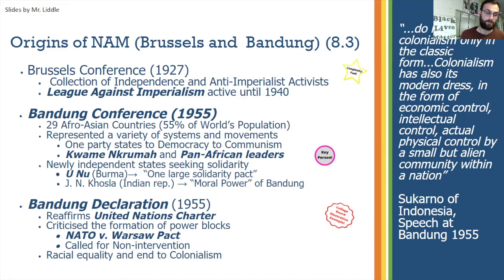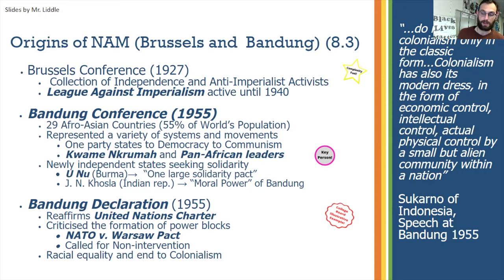The Bandung Declaration that came out of the conference did several things. First, it reaffirmed the United Nations Charter — even though these nations hadn't had a say in its creation in 1945 before most of them were independent, they claimed it as their own. They also criticized the formation of power blocks: they criticized NATO, they criticized the Warsaw Pact, and they criticized nations who joined them, seeing these two power blocks as a danger to peace — a lesson learned from how alliances helped start World War I.